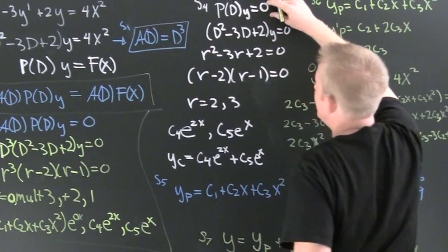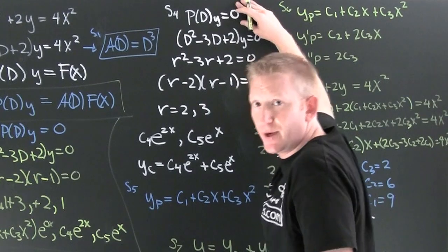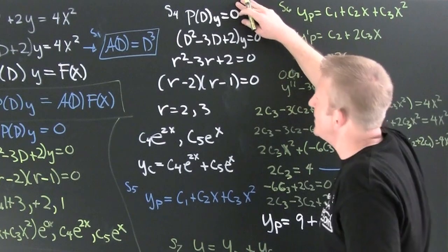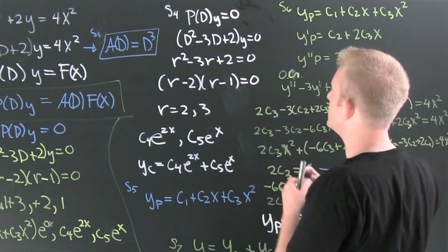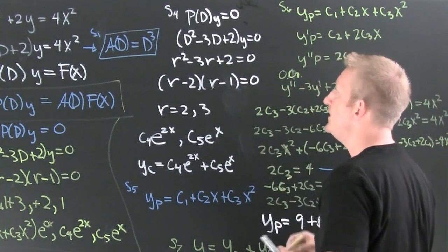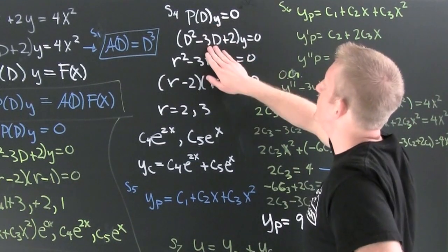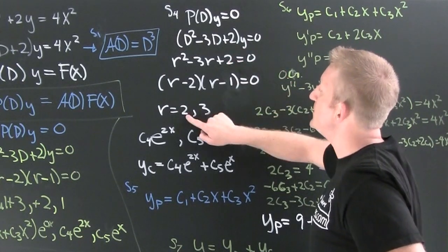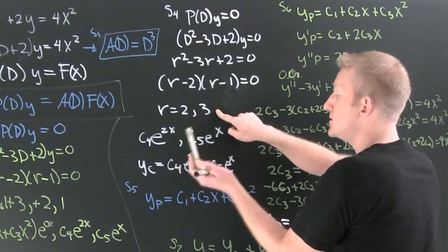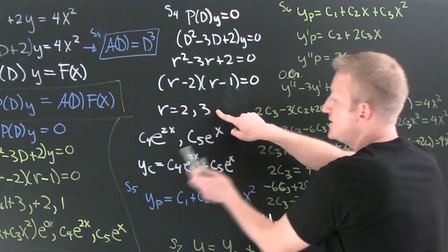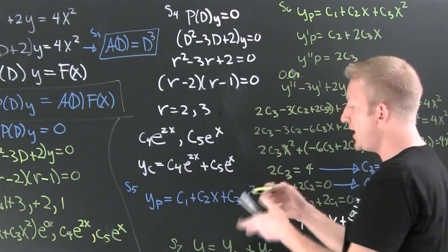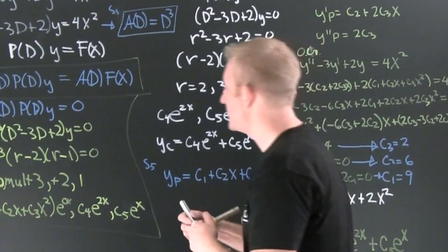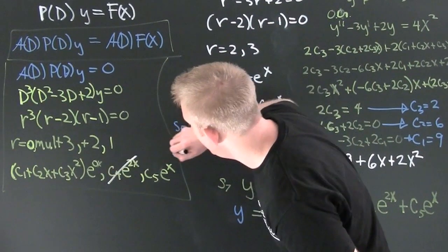Step four: take the left-hand side of the original differential equation, pretend it was homogeneous, and solve it to find y_c — so we can exclude those solutions. The characteristic polynomial factors and the roots are r = 2 and r = 1. So the solutions are c₄e^(2x) and c₅e^(x), meaning y_c = c₄e^(2x) + c₅e^(x). We then exclude those from step three's list. Step four complete.